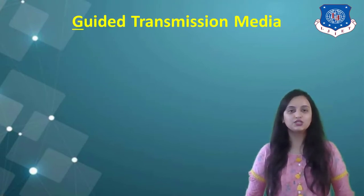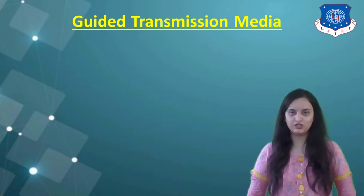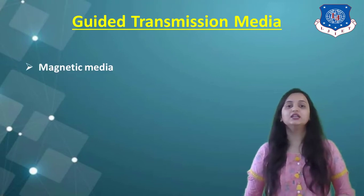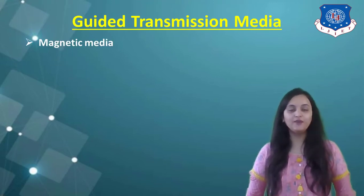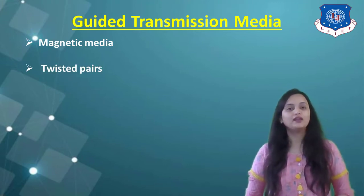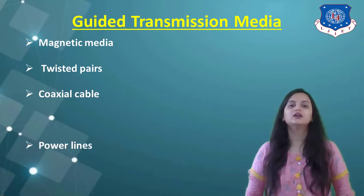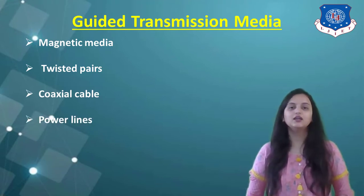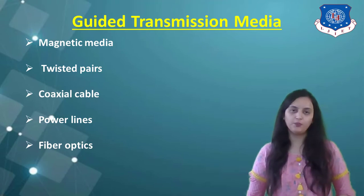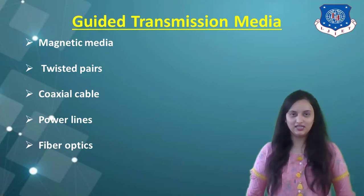Now let us see the first category — guided transmission media, also called wired transmission media. In this, the types are: first, magnetic media; second, twisted pair cables; third, coaxial cable; fourth, power line; and fifth, fiber optics. These are the basic guided transmission media. Let us understand each of these in detail.